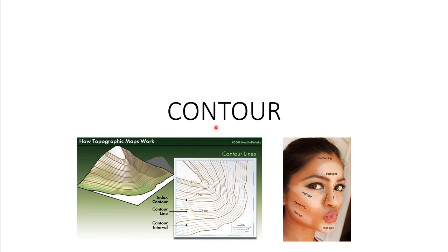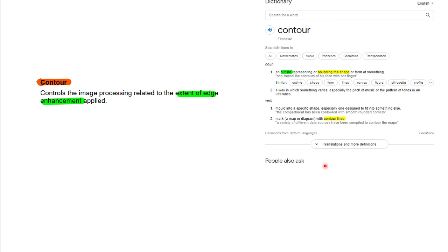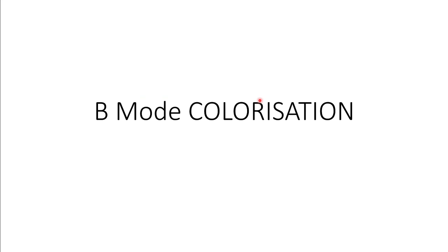Next is contour — this is a soft setting we can change. Contour means edge enhancement — the extent of edge enhancement applied to the image. When we are trying to trace the image, putting the contour setting on gives more edge detection, and those edges can be traced more clearly.